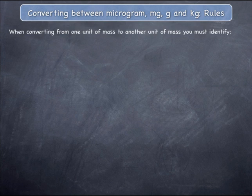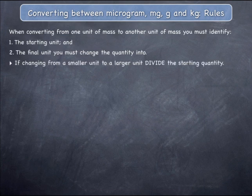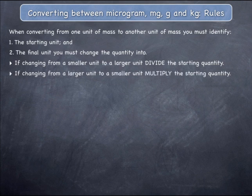When converting from one unit of mass to another unit of mass, you must identify the starting unit and the final unit you must change a quantity into. The rules are: if you are changing from a smaller unit to a larger unit, you must divide the starting quantity. Alternatively, if you are changing from a larger unit to a smaller unit, you must multiply the starting quantity.